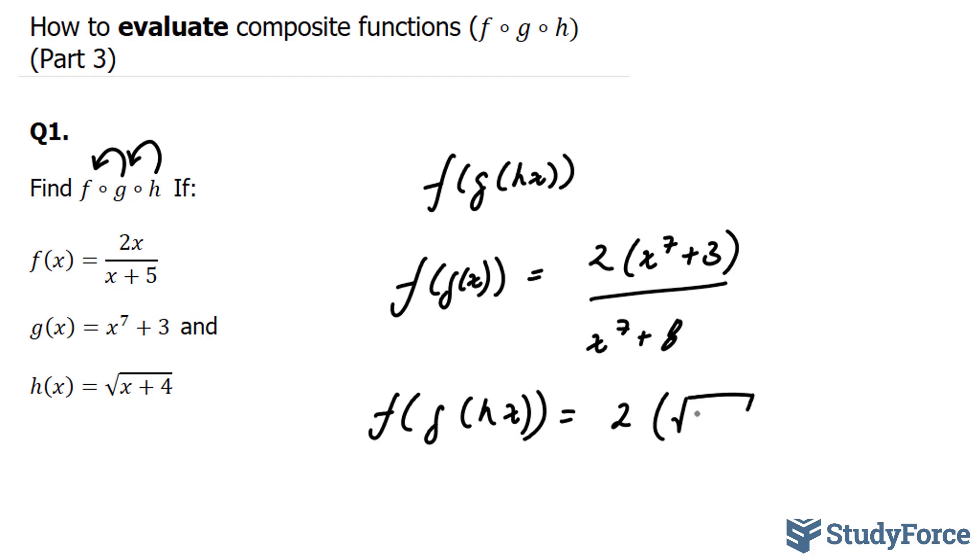the square root of x plus 4 to the power of 7 plus 3 over x, which once again we'll replace with that, x plus 4 square rooted to the power of 7 plus 8.